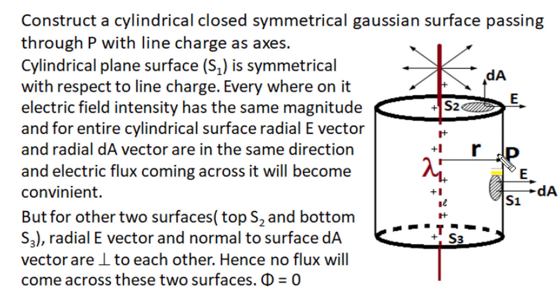To find out electric field at observation position P, we'll use Gauss law and construct a closed symmetrical Gaussian surface and for this line charge, it's a cylindrical surface with this line charge as its axis.